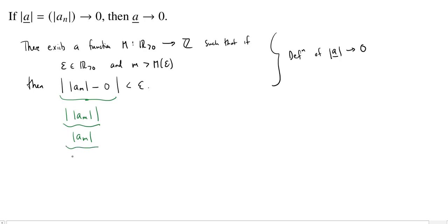But well, let's just go one little bit further and toss this minus zero back in there. And now we see that the distance between a_m and zero is less than epsilon.